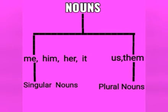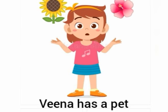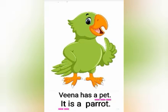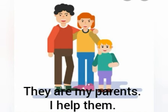The words me, him, her and it are used for singular nouns, whereas us and them are used for plural nouns. For example: 'Veena has a pet. It is a parrot.' Instead of 'a pet', we can use the pronoun 'it'. 'They are my parents.' Instead of 'my parents', we use 'them' — 'I help them.'